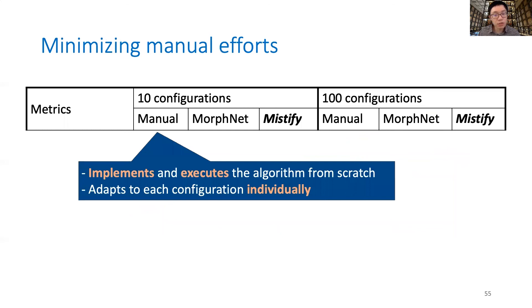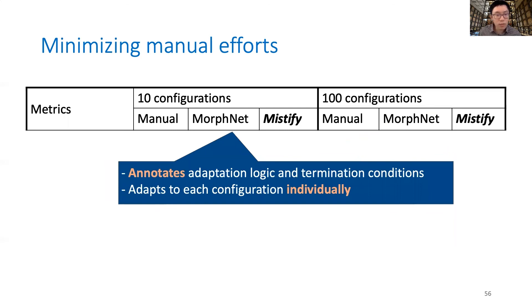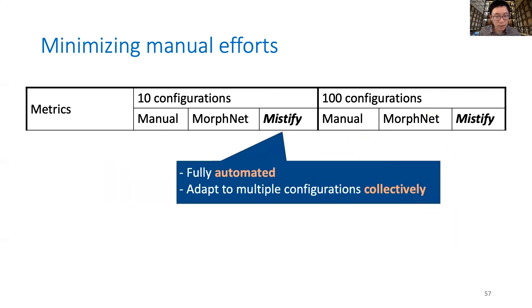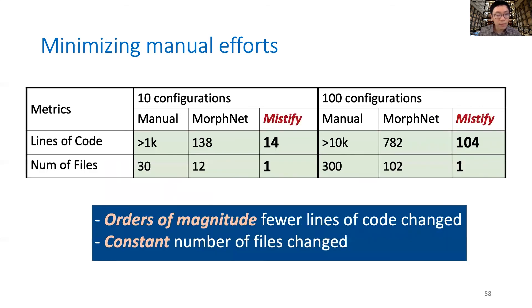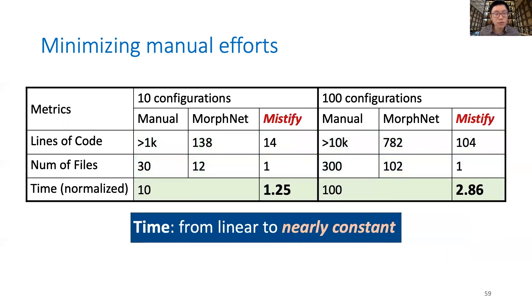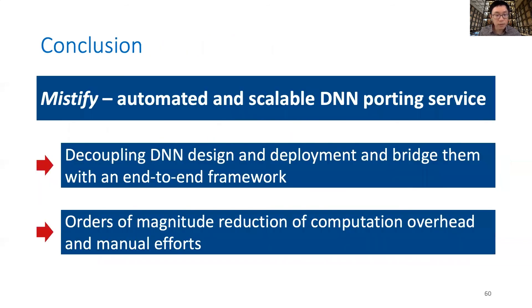Next, let's see how much Mystify reduces manual efforts and computation overhead. We compare three settings: manual tailoring, using a semi-automated adaptation algorithm MorphNet, and using our system Mystify. With Mystify, users only touch a single configuration file and achieve orders of magnitude reduction of total code changes. The total tailoring time is reduced from linear to the number of settings to almost constant. To conclude, we build Mystify, an automated and scalable deep neural network porting service. It decouples neural network design and deployment and yet bridges them with an end-to-end framework, achieving orders of magnitude reduction of computation overhead and manual efforts. Thank you.